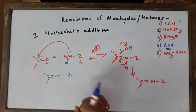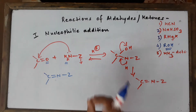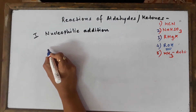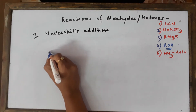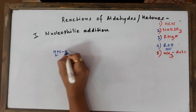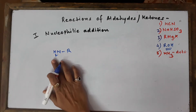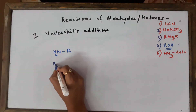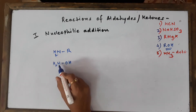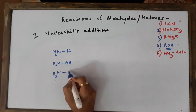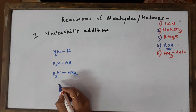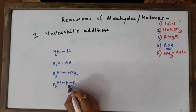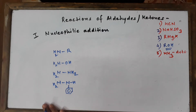There are going to be six reagents in total. The first reagent is a primary amine. The second reagent is hydroxylamine. The third reagent is hydrazine. The fourth reagent is hydrazine with a phenyl group attached - that becomes phenylhydrazine.